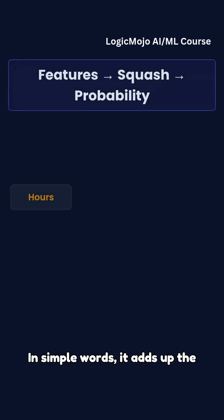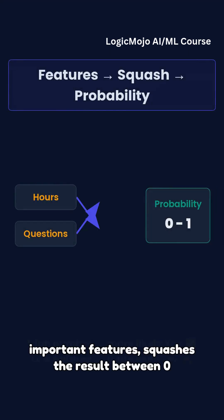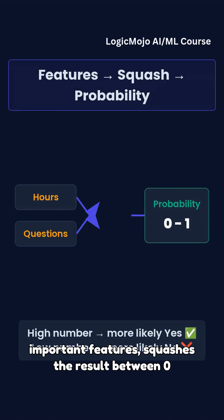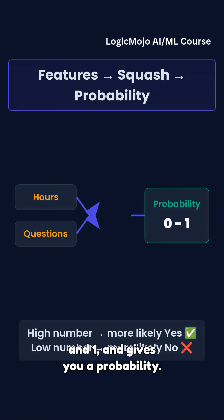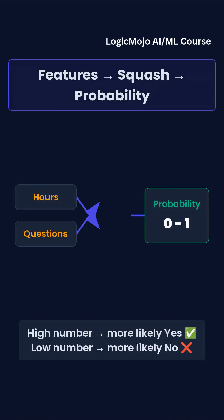In simple words, it adds up the important features, squashes the result between 0 and 1, and gives you a probability. High number — more likely yes. Low number — more likely no.